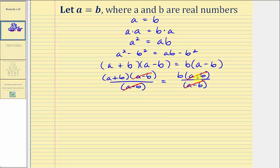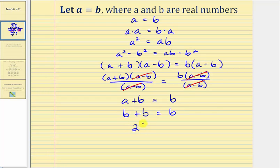So now we're left with the simplified equation A plus B equals B. Since we know A equals B, we'll perform a substitution for A. After substituting, we have B plus B equals B. B plus B equals two B, so two B equals B. For our last step, we'll divide both sides by B. Since B divided by B simplifies to one, we now have what seems to be a proof that two equals one, or one equals two.